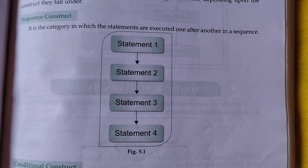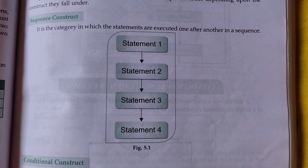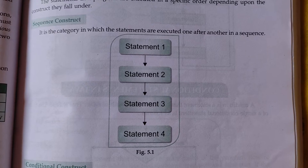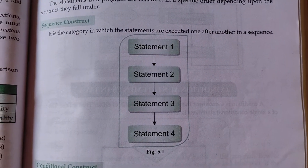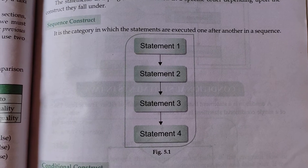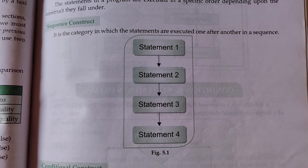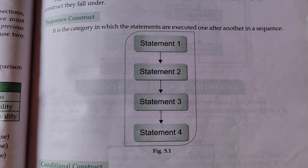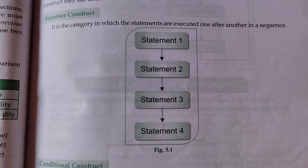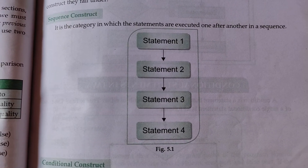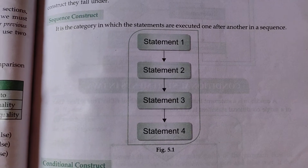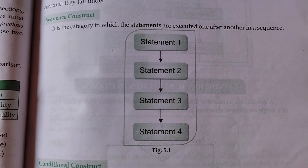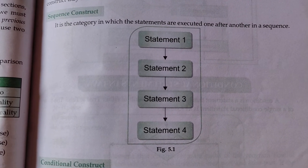In sequential construct, statements execute one after another. For example, under void main: int a = 5, int b = 10, int c = a + b, and System.out.println(c). The statements will execute in order — first int a = 5, then int b = 10, then int c = a + b to add the values, and finally print c.